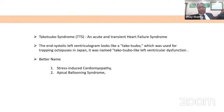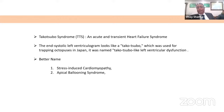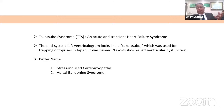Takotsubo syndrome has been defined as an acute and transient heart failure syndrome. If you take the LV angiograms of these patients, the end-systolic frames resemble a contraption used to catch octopuses in Japan — and since the initial reports came from Japan, the name became Takotsubo cardiomyopathy. A better name would probably be stress-induced cardiomyopathy or apical ballooning syndrome, which gives some idea of what precipitates the condition and how the heart appears in imaging.